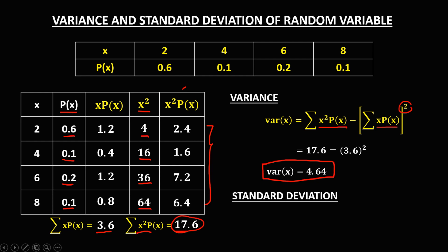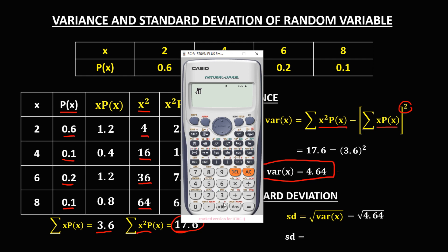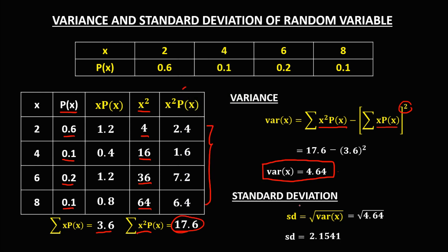For the standard deviation, we take the square root of the variance. Since the variance is 4.64, we compute the square root of 4.64. So the standard deviation is 2.1541.